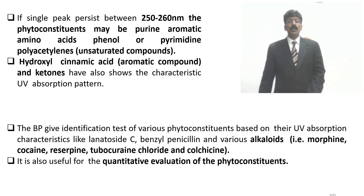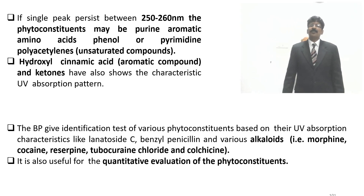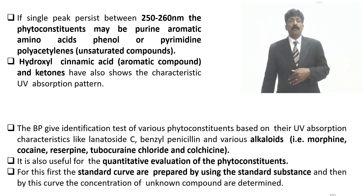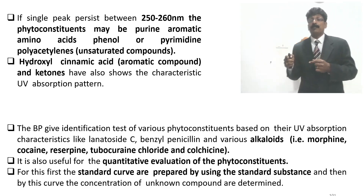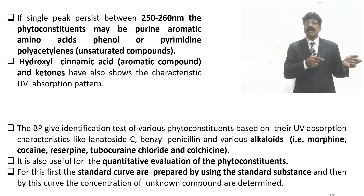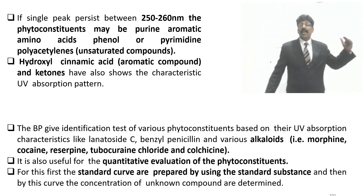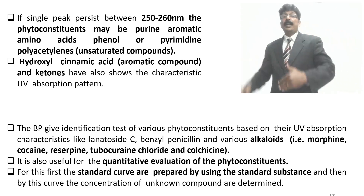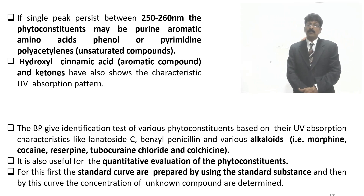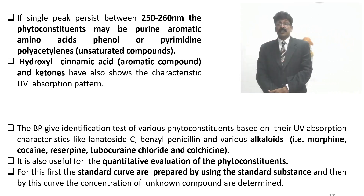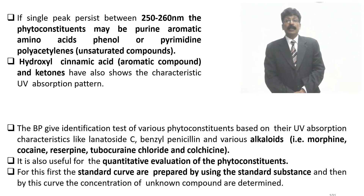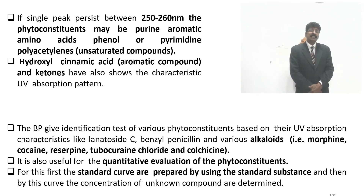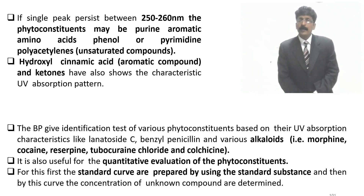UV spectroscopy is also useful for quantitative evaluation of phytoconstituents. A standard curve is prepared using different concentrations — 2, 3, 4, 5, 10, 15, 20 micrograms per mL. An unknown solution's absorption is measured, extrapolated on the standard curve, and the concentration is determined graphically. Lambda max — the maximum absorption wavelength of the solution — is first scanned and identified before performing quantitative estimations.